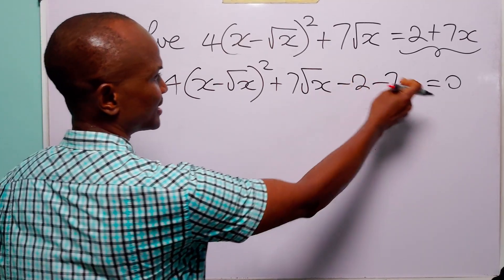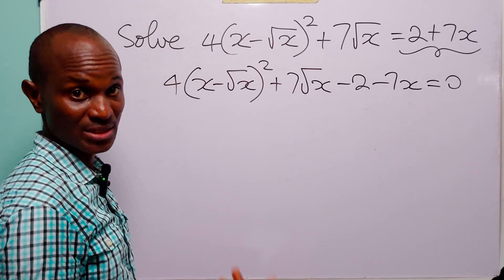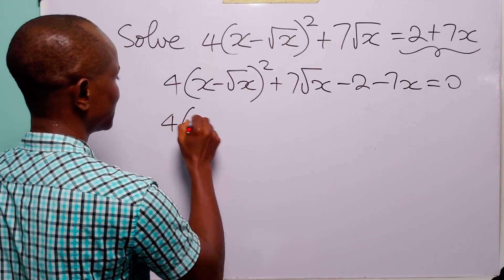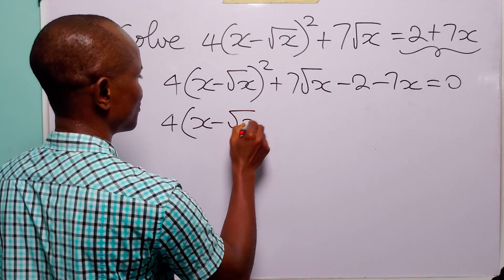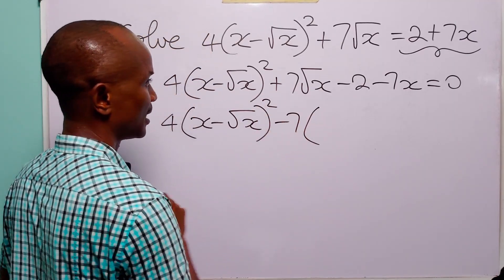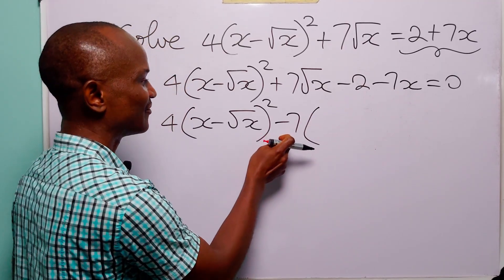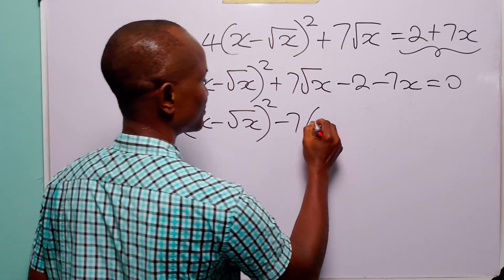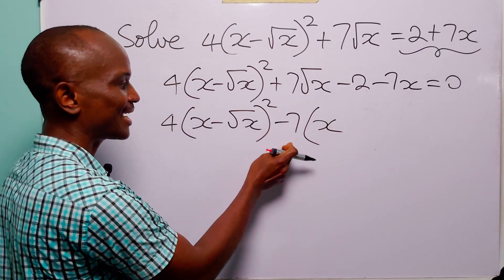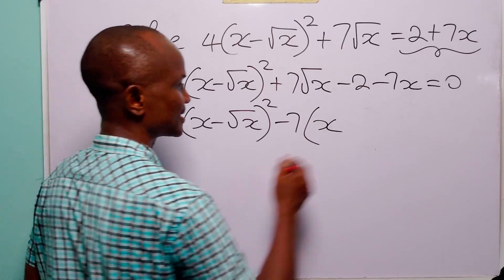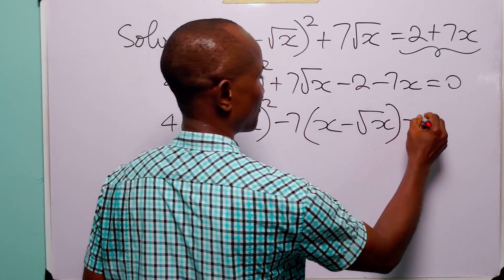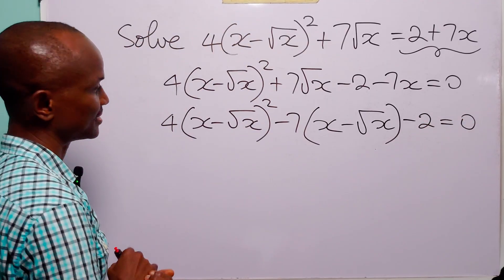Now, when you look at these two terms, you're going to see a common factor, which is 7. So let us factorize that. We have 4 times x minus root x, squared, minus 7. Now, minus 7x divided by minus 7 is equal to x, and plus 7 root x divided by minus 7 is equal to minus root x. Now, we have minus 2, and this is equal to 0.